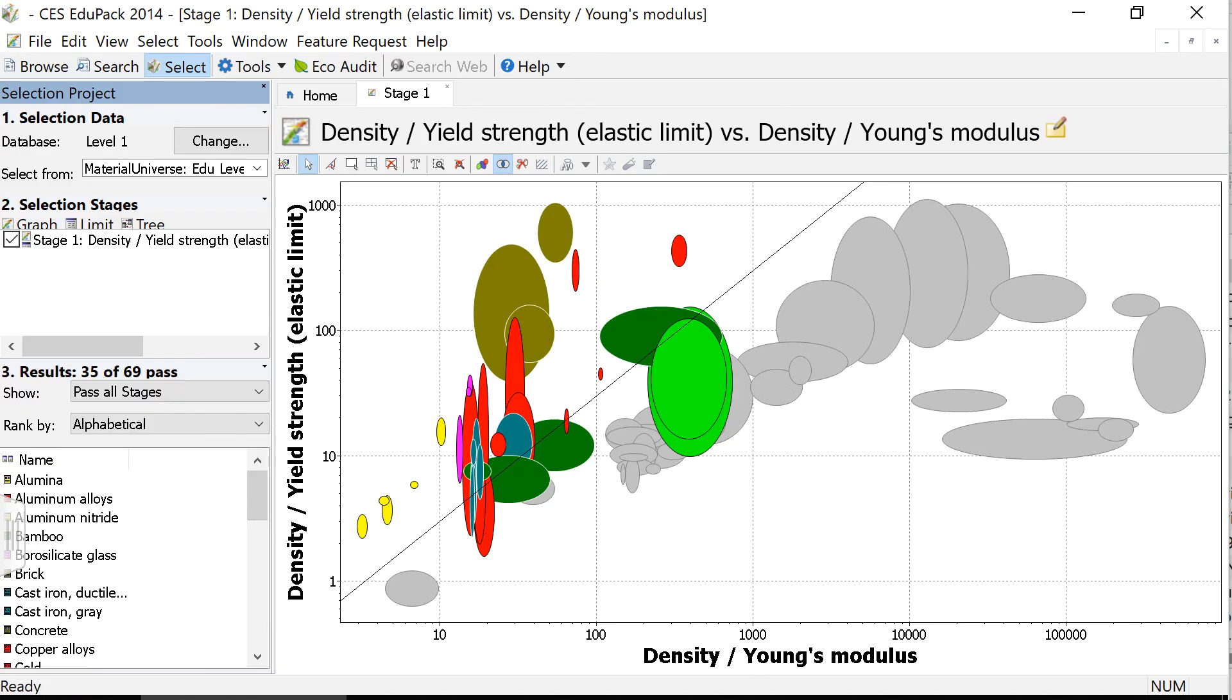Our next step is that we need to create a plot within CES EduPack. You can see I've already prepared this plot here. We have a plot of the density divided by the yield strength on the y-axis, and density divided by Young's modulus on the x-axis.